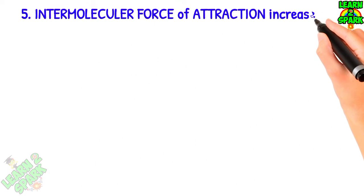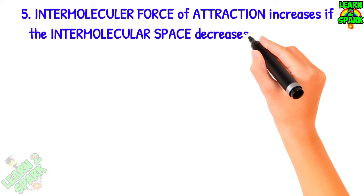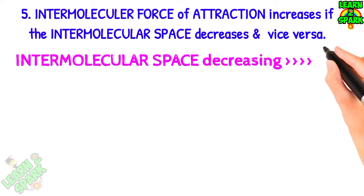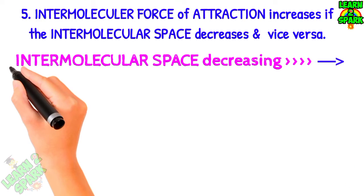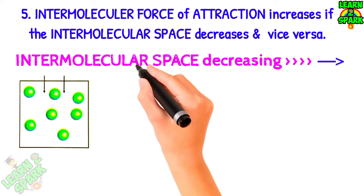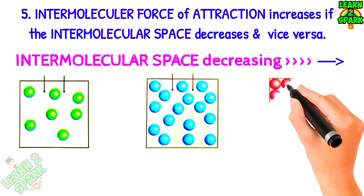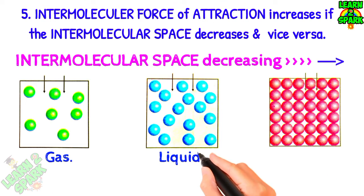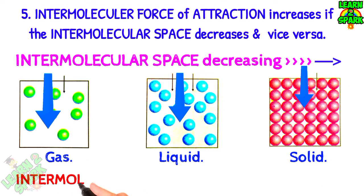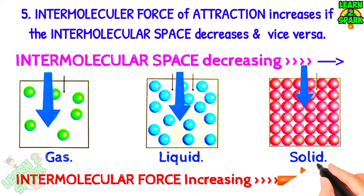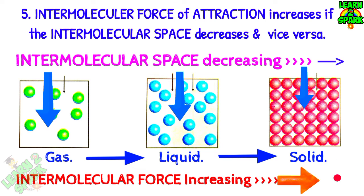Let's see postulate number five, which says intermolecular force of attraction increases if the intermolecular space decreases and vice versa. Let's see how. In gases, intermolecular space is maximum. In liquids, it has less than gas, and in solids it is minimum. Therefore, intermolecular force of attraction increases gradually from gas to solids. Gas has minimum intermolecular force of attraction.